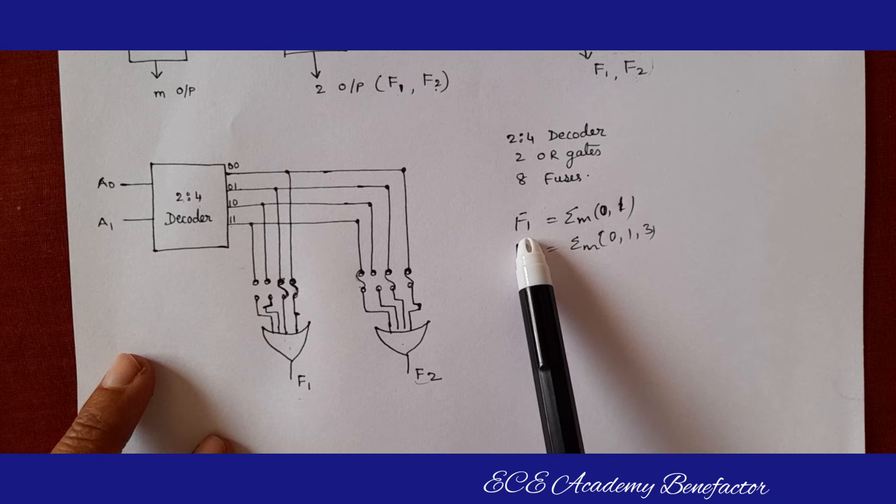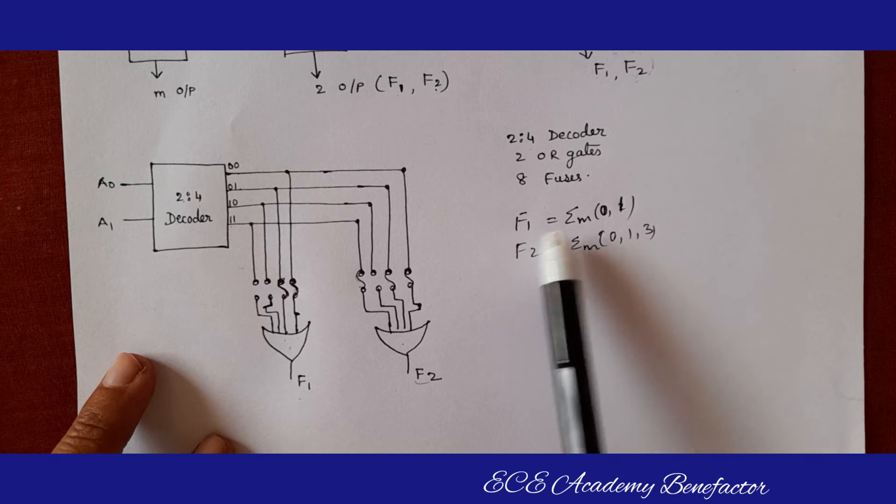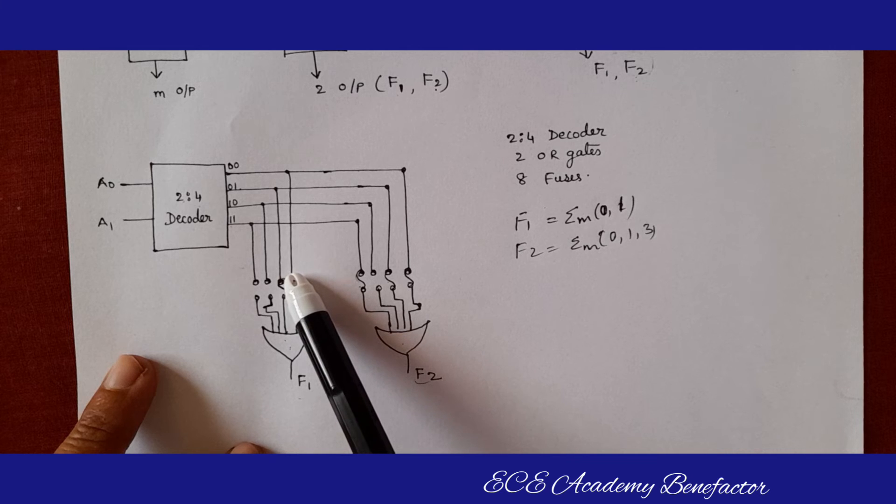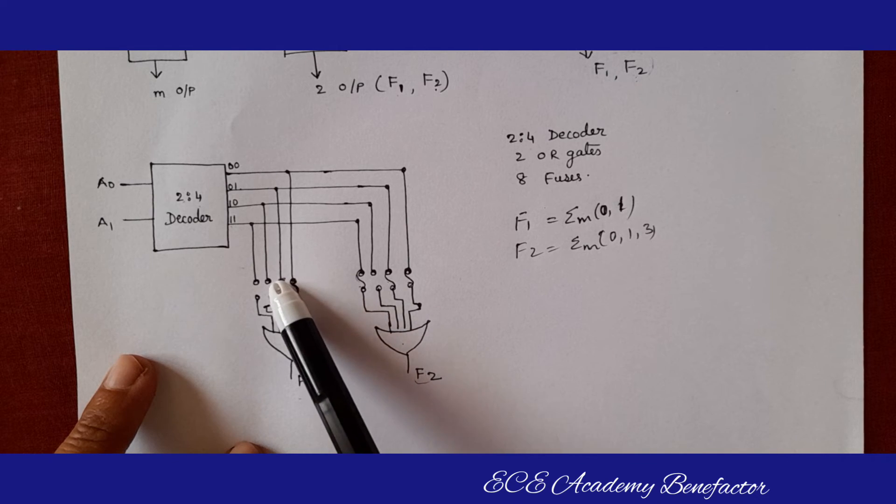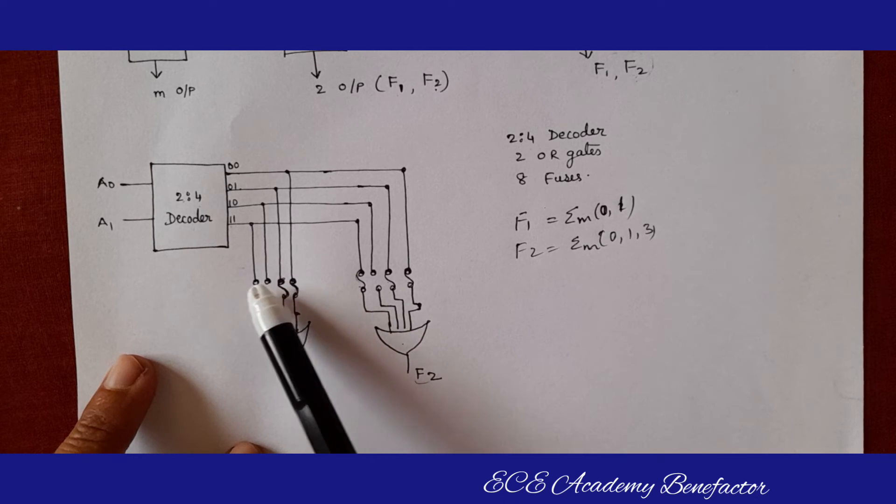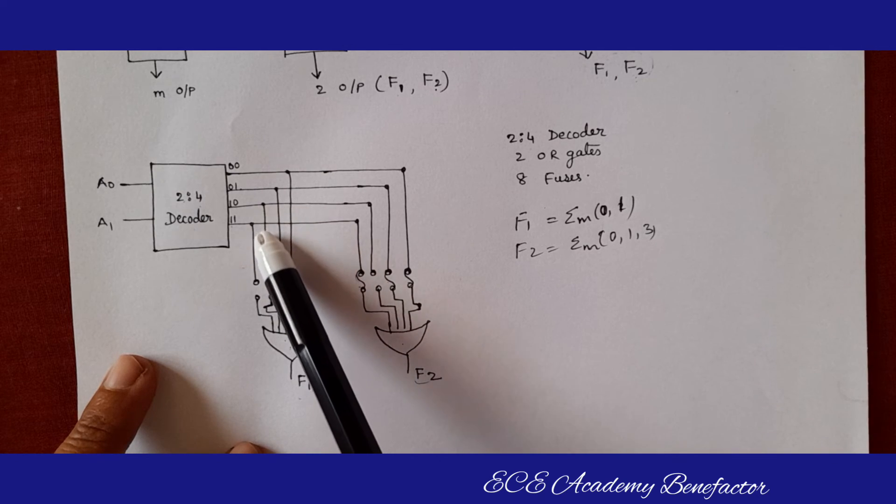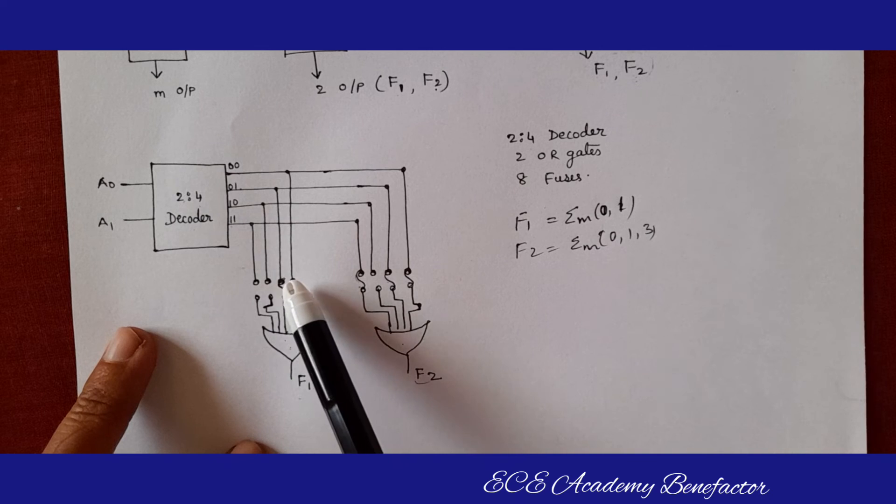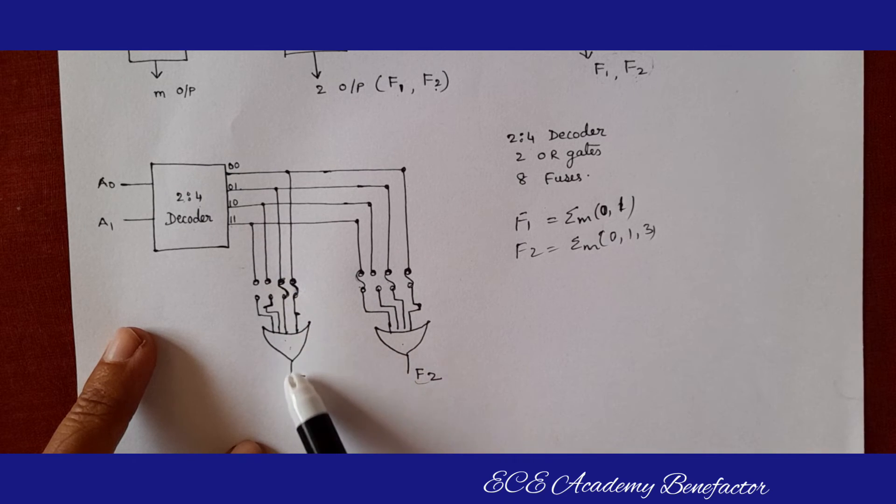The first function f1 is having minterm 0 and 1. So we have connected this fuse 0 and this is 1. These two are disconnected, it means there is no input flowing through this line. So only 0 and 1 are coming to f1.